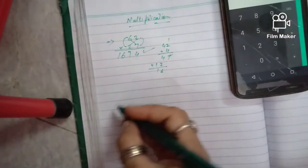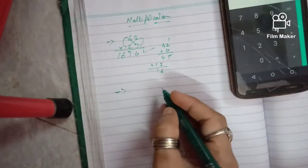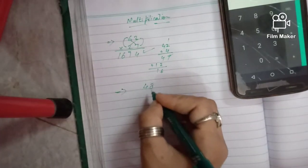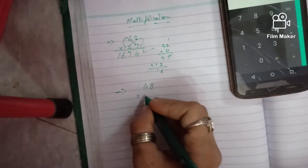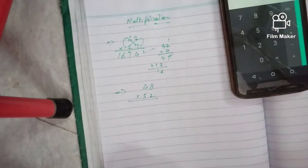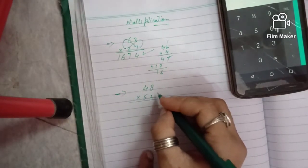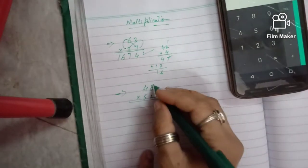Now let's have another example. Okay, we take 48 multiply by 52. Using the same method, we will multiply first of all these two digits.